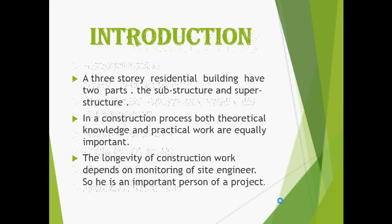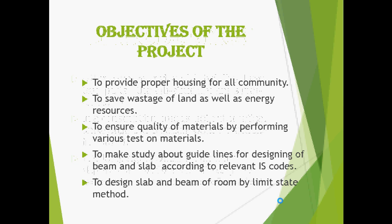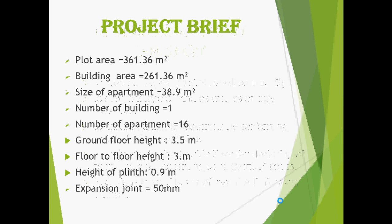A three-story residential building has two parts: the substructure and the superstructure. The main objectives of this project are: to provide proper housing for all community, to save wastage of land as well as energy resources, to ensure quality of materials by performing various tests, to study the guidelines for design of beam and slab according to relevant IS codes, and to design the slab and beam by limit state method.